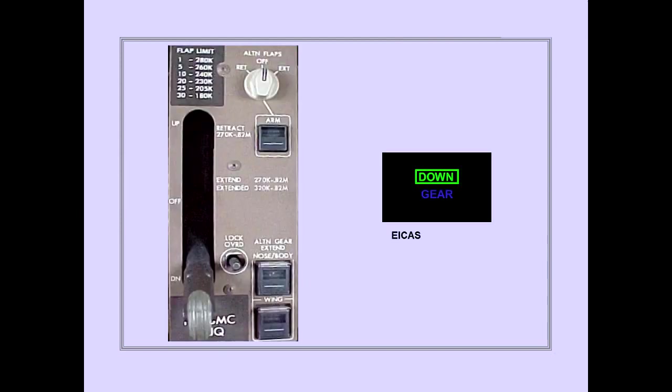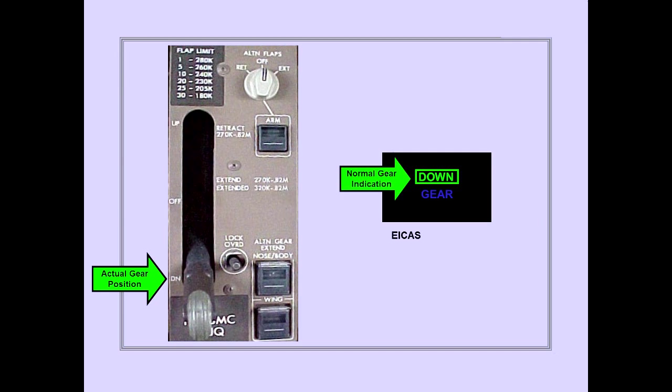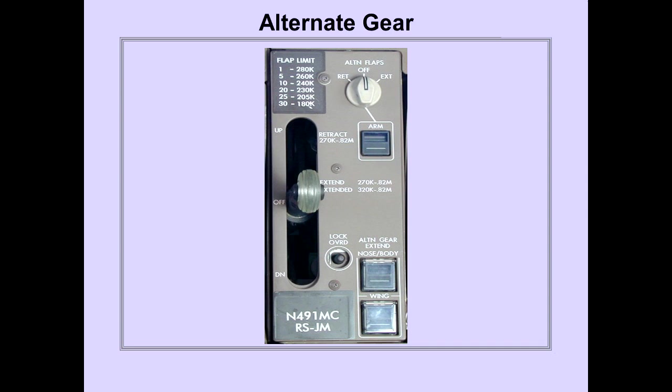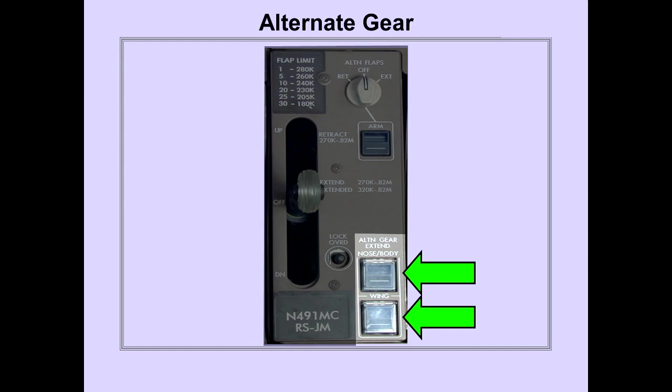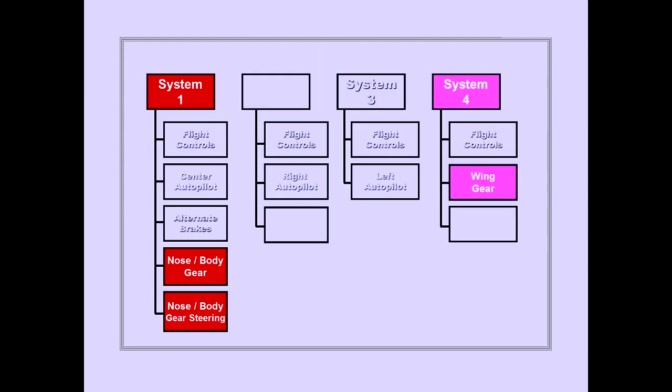The landing gear position is displayed on ICAS. For normal operations, a single box for landing gear position is displayed. Alternate gear operation is controlled by two alternate gear extend switches. Hydraulic systems one and four power the landing gear systems. Hydraulic system one powers nose and body gear actuation and nose and body gear steering. System four powers wing gear actuation.